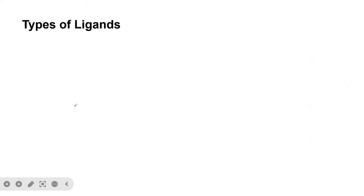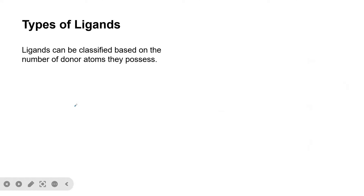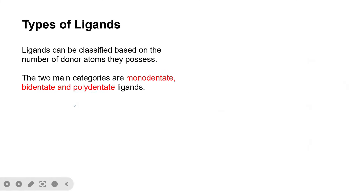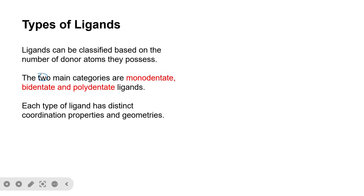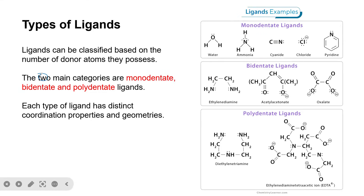Ligands can also be classified based on the number of lone pairs of electrons they donate — that is, the number of donor atoms they possess. There are basically three main categories: monodentate, bidentate, and polydentate ligands. Monodentate ligands donate only one lone pair of electrons, bidentate donate two, and polydentate donate more than two. Each type has distinct coordination properties and geometry.